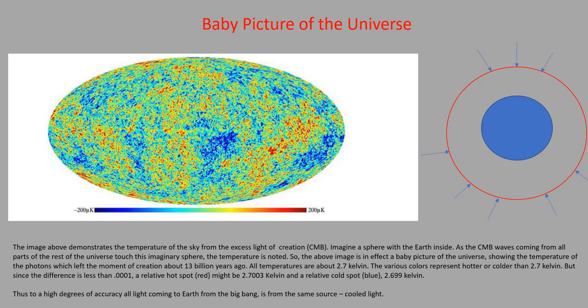All the temperatures are about 2.7 Kelvin. The various colors represent hotter or colder than 2.7 Kelvin. But since the difference is less than 0.0001, a relative hotspot, say red here, might be 2.7003 Kelvin, and a relative cold spot, the blue marks here, might be 2.699 Kelvin. So to a high degree of accuracy, all light coming to Earth is coming from the same source, and we think it's the light from the Big Bang.